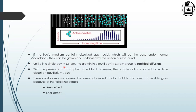Unlike a single cavity system, growth in a multi-cavity system is because of rectified diffusion. Rectified diffusion is a process in which bubbles under acoustic excitation grow or dissolve due to mass transfer into or out of the bubble. This rectification of mass is a direct consequence of the applied sound field. With the applied sound field, the bubble radius is forced to oscillate about an equilibrium value, and these oscillations can prevent the eventual dissolution of the bubble and even cause it to grow because of the area effect and shell effect.